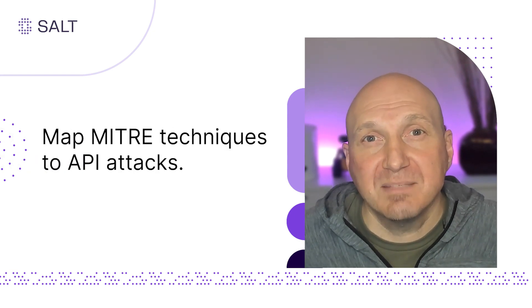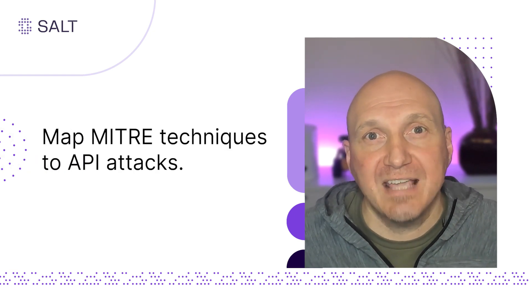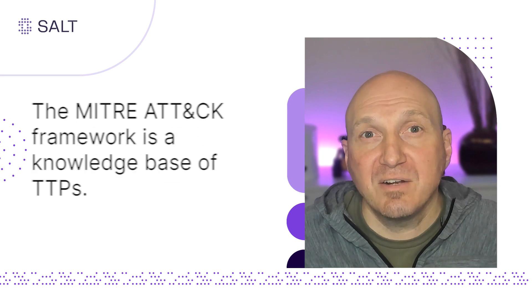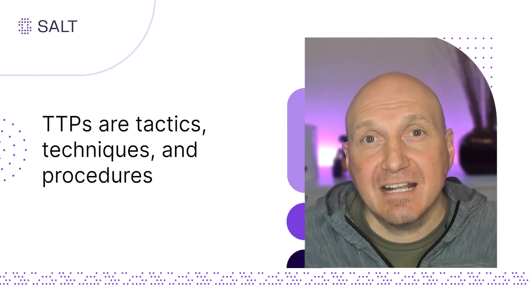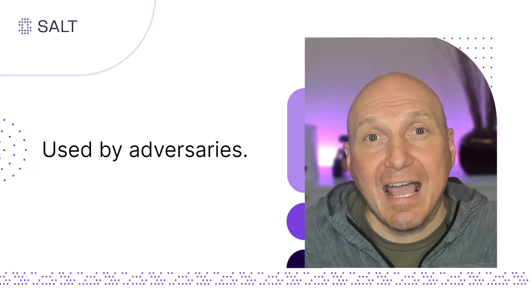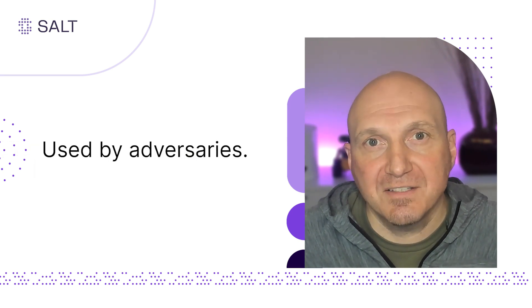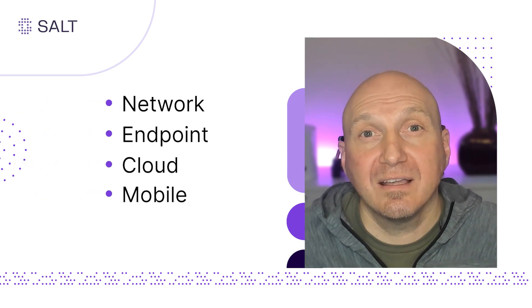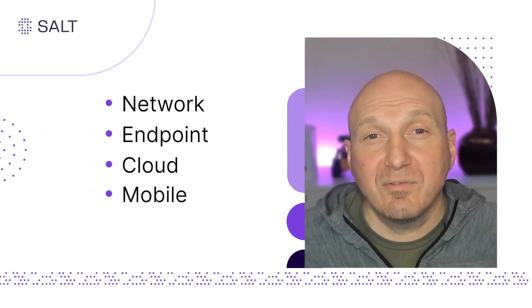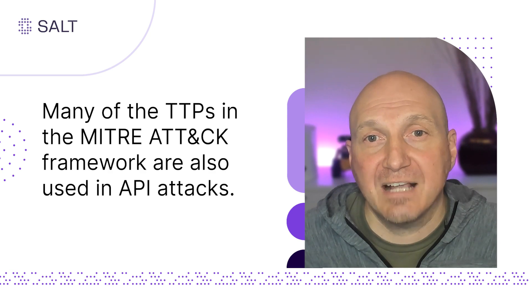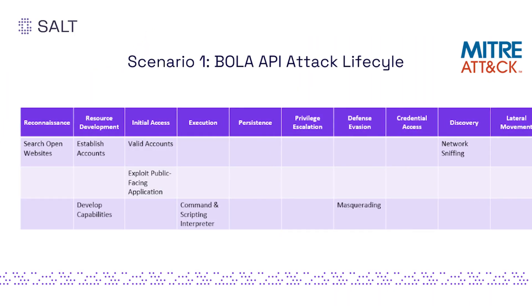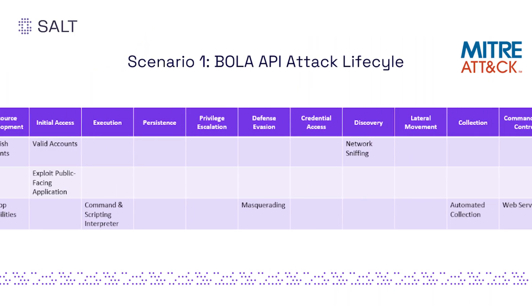That's why it's important to understand the tactics and techniques used by attackers while targeting APIs. One way to achieve this is by mapping the MITRE ATT&CK framework to API security attacks. The MITRE ATT&CK framework is a comprehensive knowledge base of TTPs — tactics, techniques, and procedures used by adversaries when conducting cyber attacks. Its matrices cover a wide array of attack vectors including network, endpoint, cloud, and mobile. However, despite not having an API security-specific matrix today, many of the TTPs identified in the framework are also used by API attackers in the different phases of their attack campaigns.